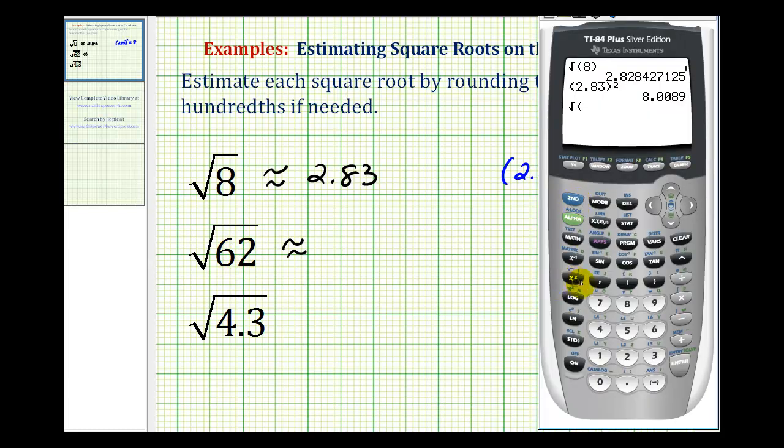So second x squared, 62. We'll round this to the nearest hundredth, so we'll say it's approximately 7.87.